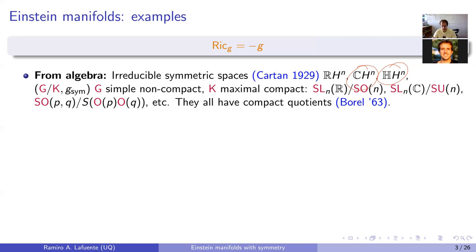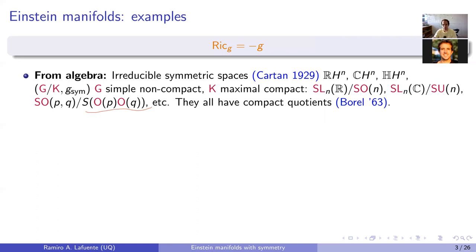In the negative case, an irreducible symmetric space can be written as a quotient of a simple non-compact Lie group G by a maximal compact subgroup K. They admit a unique up-to-scaling G-invariant Riemannian metric, which turns out to be Einstein. Explicit examples are SL(n,R)/SO(n), SL(n,C)/SU(n), SO(p,q) mod its compact subgroup, and so on — very classical objects in mathematics and geometry.